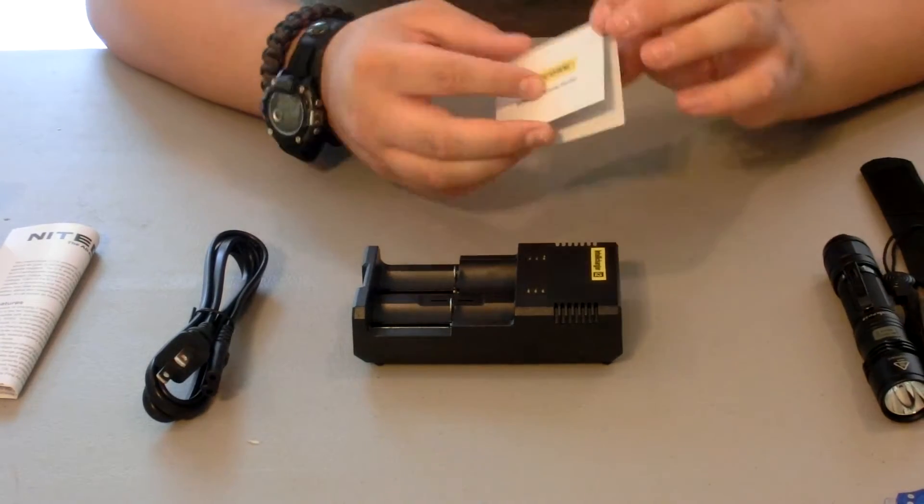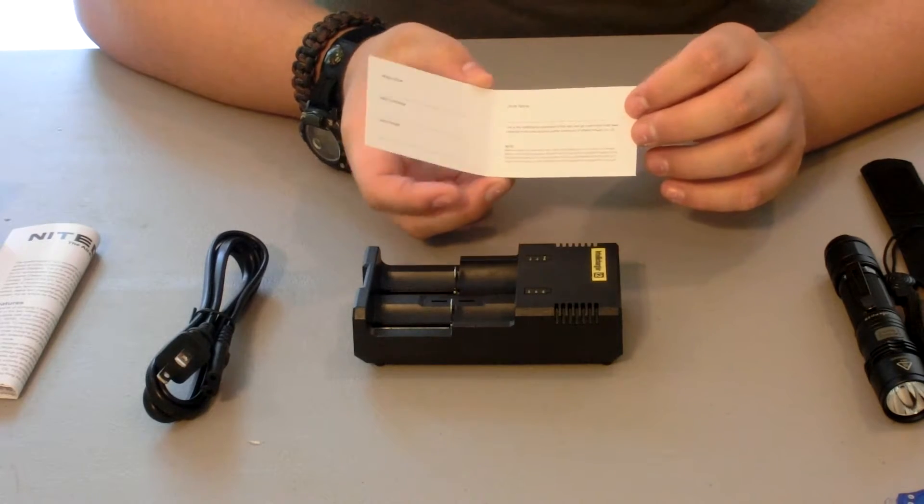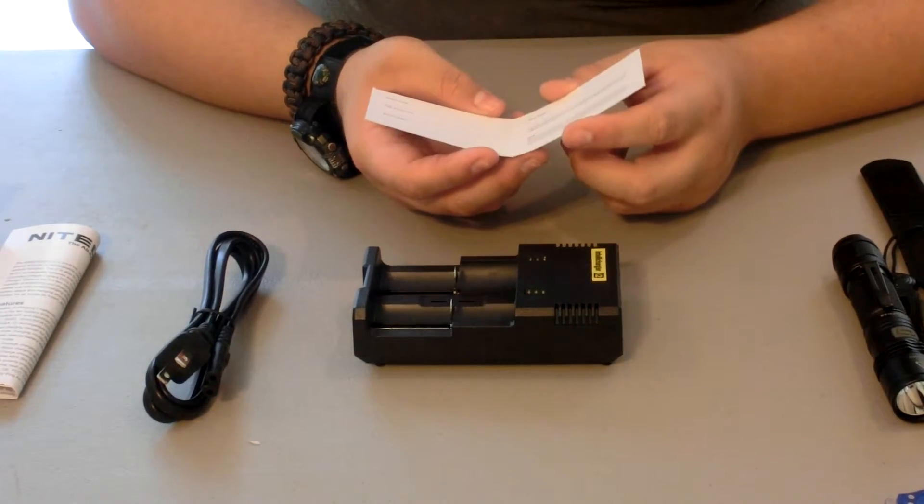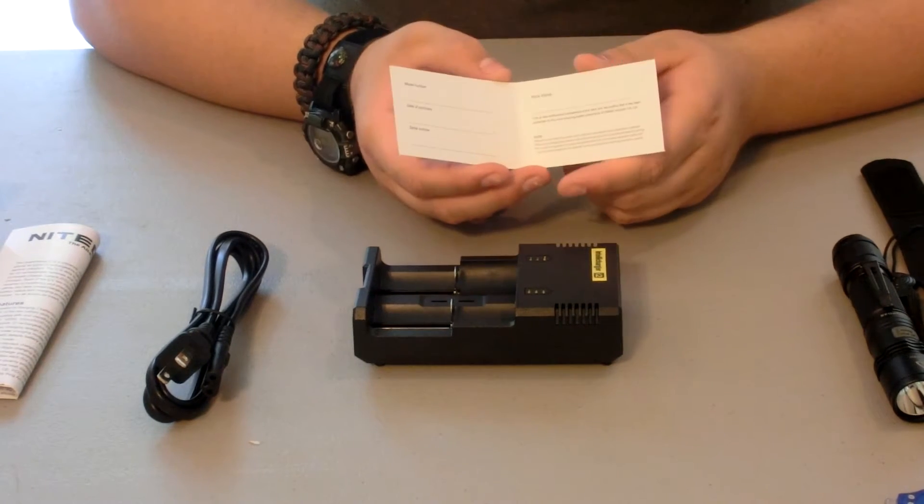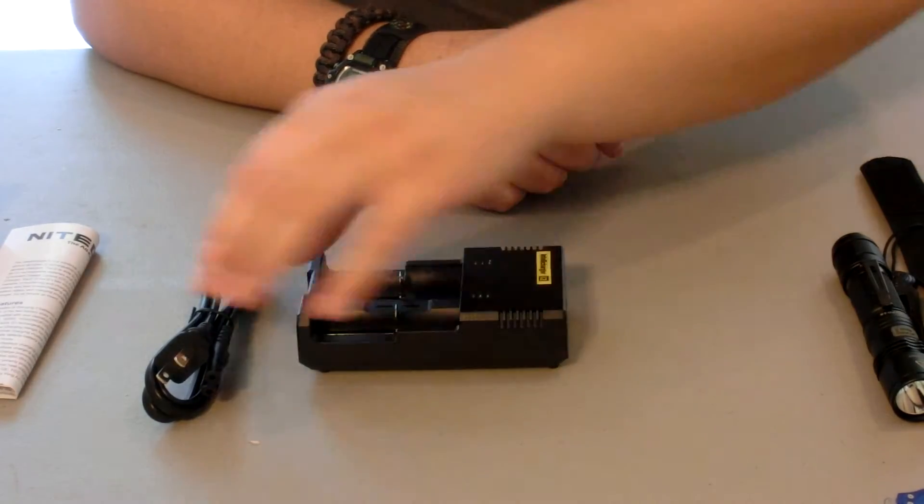Pop that out, get the plastic out the way. It comes with a Nitecore warranty card where if it breaks or anything you write down model number, date of purchase, serial number, and then why you need it to be replaced.